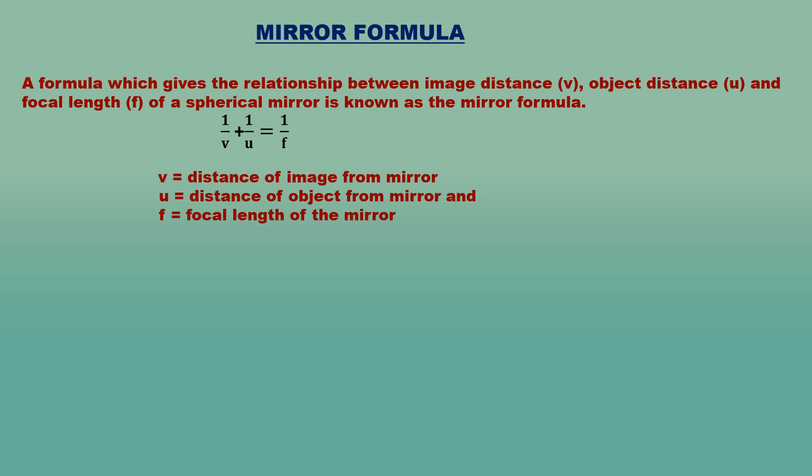Mirror Formula: The distance of an object from the pole of a mirror is known as object distance, denoted by U. The distance of the image from the pole is the image distance, denoted by V. The distance of focus from the pole is the focal length, denoted by F. The mirror formula gives the relationship between image distance V, object distance U, and focal length F of a spherical mirror: 1/V + 1/U = 1/F.